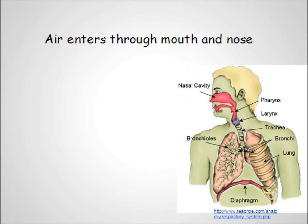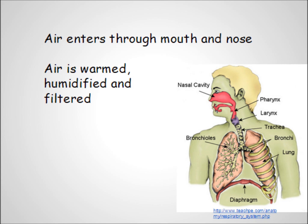Air gets into our body through our mouth and nose, so those are the first two components of the respiratory system. The mouth and nose do several things for us other than just bringing the air in. The nose, and to a lesser degree the mouth, warm, humidify, and filter the air we breathe in.